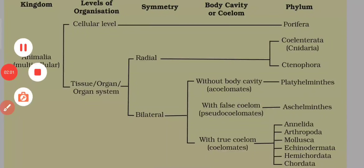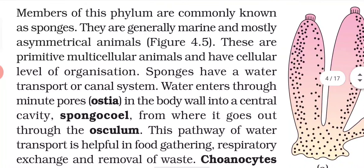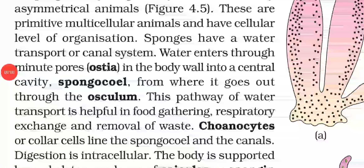Now we will discuss the important characteristic features of different phyla. First, Porifera: members of this phylum are commonly known as sponges. They are generally marine, found only in seawater, and mostly asymmetrical. These are primitive multicellular animals with a cellular level of organization.